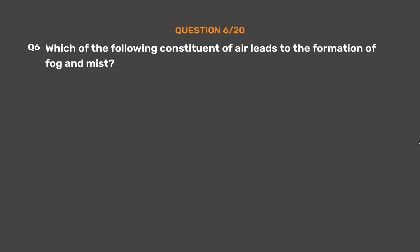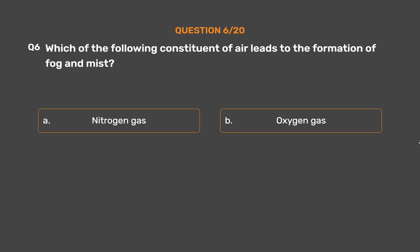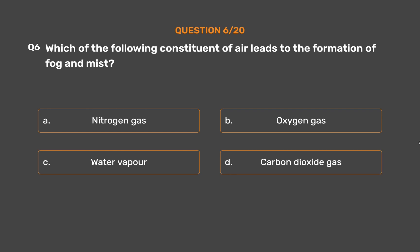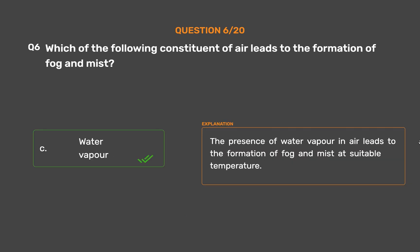Question number 6. Which of the following constituents of air leads to the formation of fog and mist? Option A: Nitrogen gas. Option B: Oxygen gas. Option C: Water vapor. Option D: Carbon dioxide gas. The correct answer is Option C: Water vapor. The presence of water vapor in air leads to the formation of fog and mist at suitable temperature.